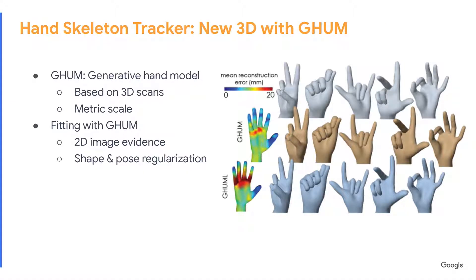3D key points unlock hand pose analysis in a view-invariant manner. To obtain 3D hand pose ground truth, we fitted the GUM model to our existing 2D hand dataset. During the fitting process, the shape and hand pose variables were optimized such that the reconstructed model aligns with 2D key points.